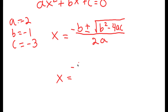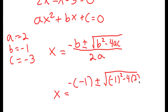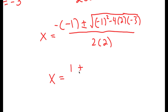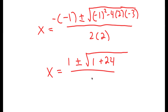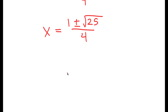Plugging in our values: b is negative 1, so I get negative of negative 1 plus or minus the square root of negative 1 squared minus 4 times 2 times negative 3, all over 2 times 2. This turns into 1 plus or minus the square root of 1 plus 24, over 4, which is 1 plus or minus the square root of 25, over 4. Now we simplify the radical: the square root of 25 is 5, so I get 1 plus or minus 5 over 4.